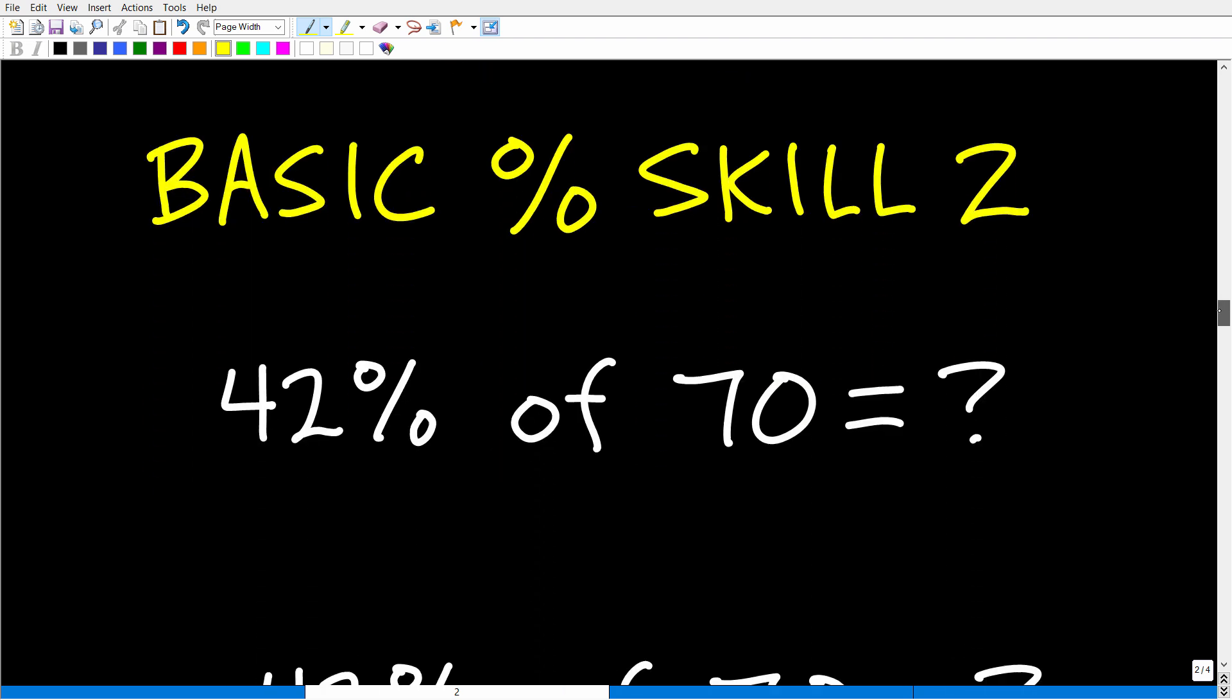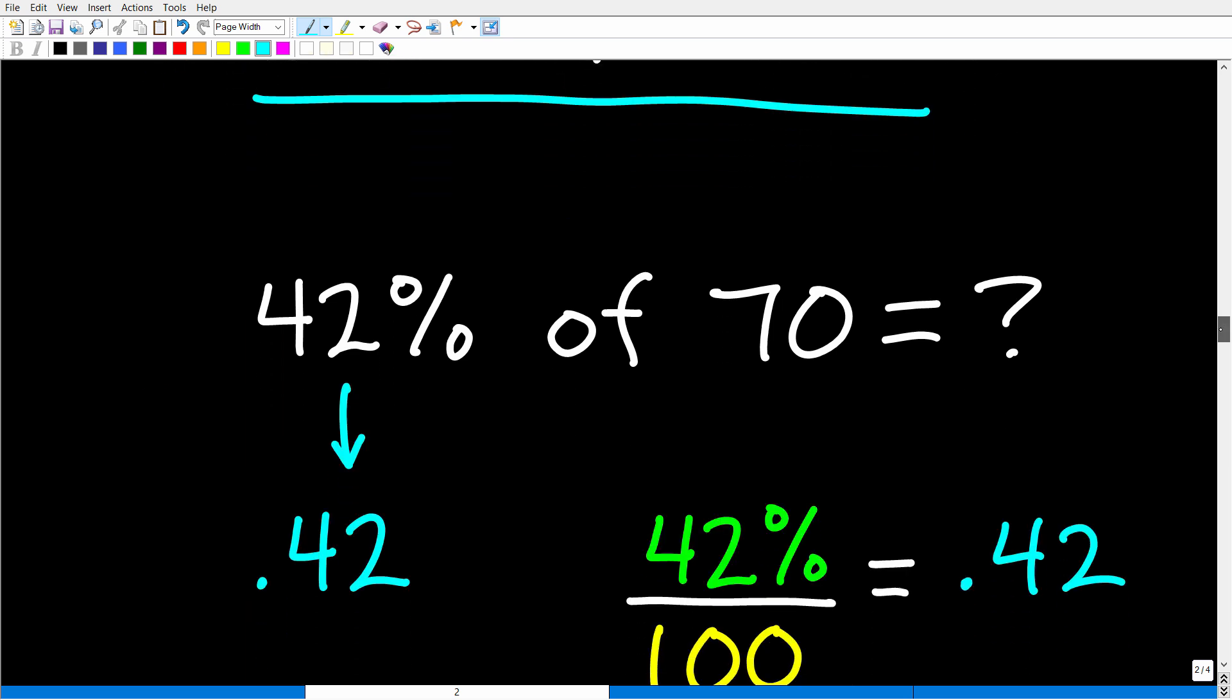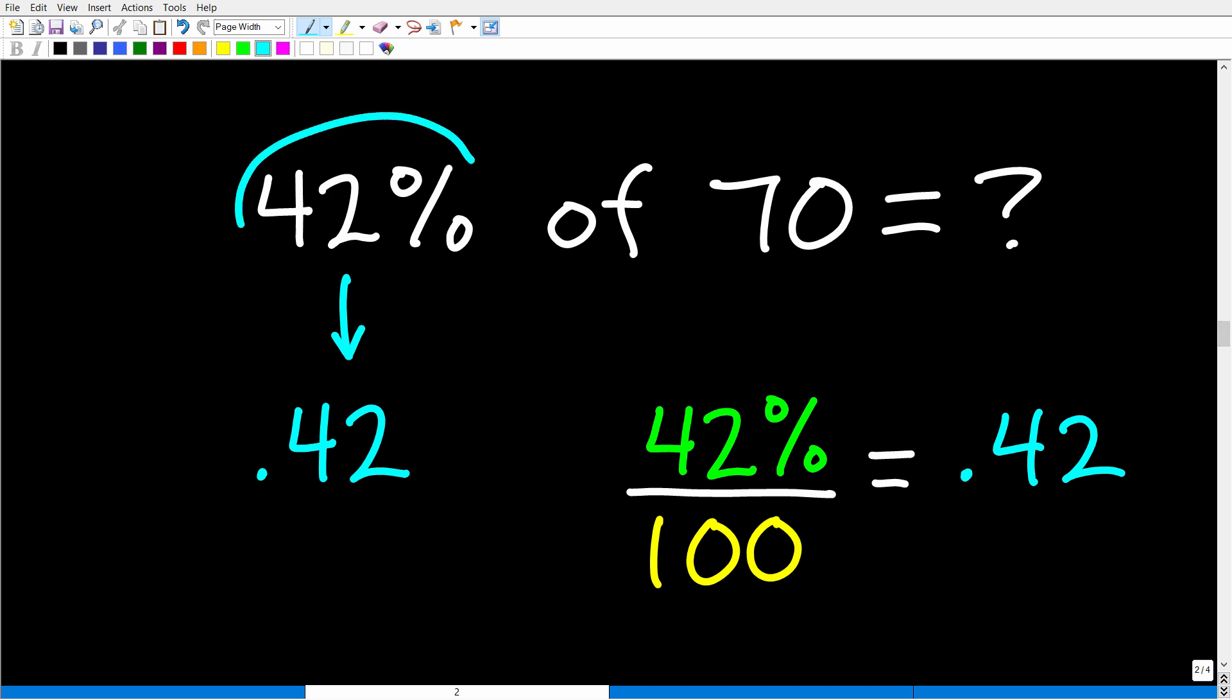Let's talk about basic percent skill number two, and that is finding the percent of a number. So this is a little bit different. So if I ask you, 42% of 70 is what? And this is a very common type of problem. So how do we do these type of problems? Well, again, feel free to use your calculator. But what we need to do is we kind of need to unwind the percent, and we have to go back to a decimal. So remember, when we had a decimal, to change a decimal to a percent, we multiply by 100. But if we want to go from a percent to a decimal, the way we do that is we divide by 100. So the first thing we need to do to answer a question like this when we want to find a percent of a number is to change the percent back into a decimal. So 42% divided by 100 is the same thing as 0.42.